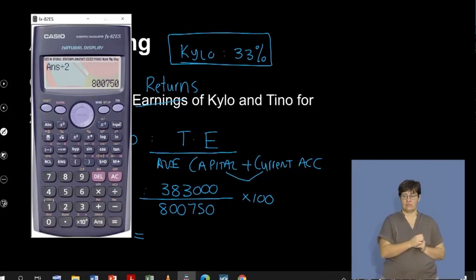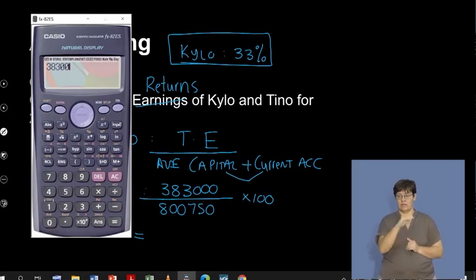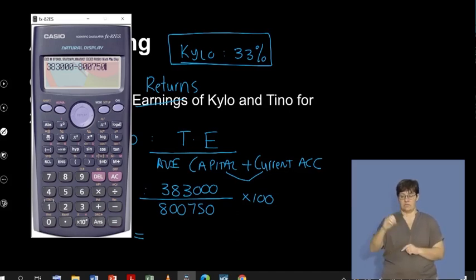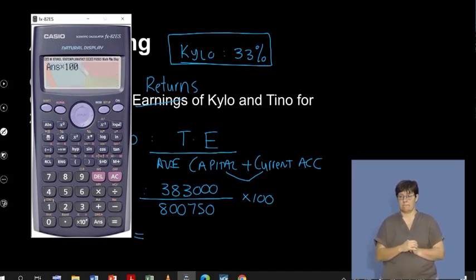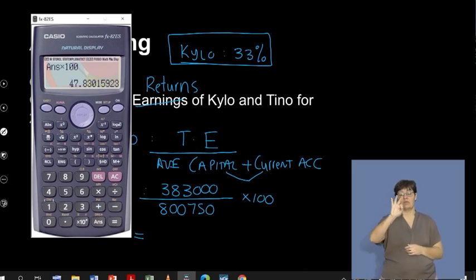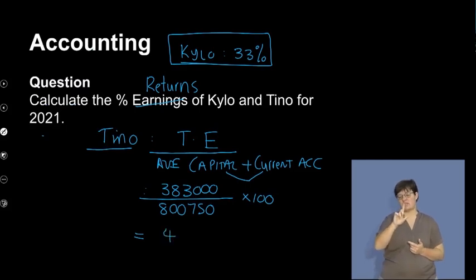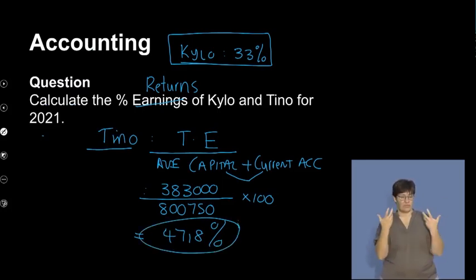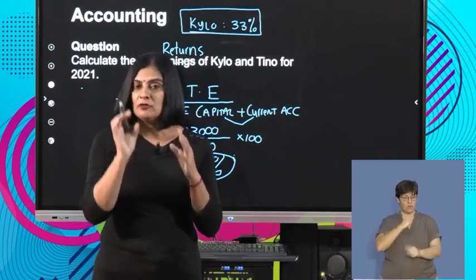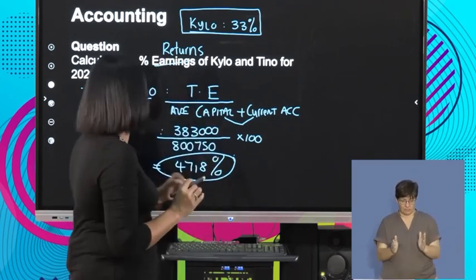We need the calculator once more. So, total earnings: 383,000 divided by 800,750, and I'm going to multiply this by 100. And that gives me a percentage of 47.83%, or 47.8%. So 47.8%. We've done the calculation — we calculated the percentage return for both partners. Let's now move on to the next question.